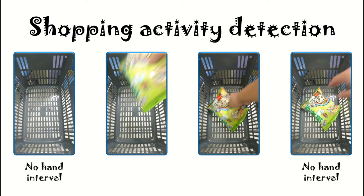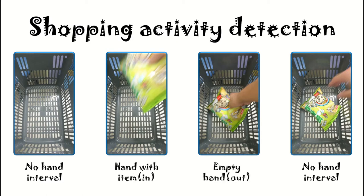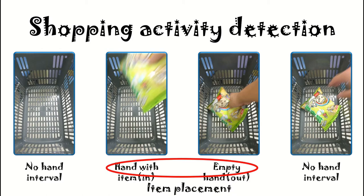In this example, between the two no hand intervals, a holding item interval and an empty hand out interval can be found. This is a placing item event, so an item is added to the shopping list.